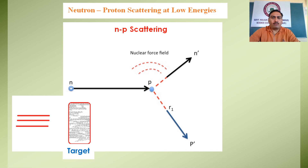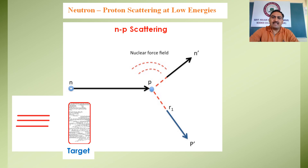The neutron-proton scattering cross section has been examined extensively, both experimentally and theoretically, at low energies and at high energies. At low energy below 10 MeV, the scattering is essentially due to neutrons having zero angular momentum, that is the quantum number L equals zero. Hence, in the center of mass system, the angular distribution of scattered neutrons is isotropic. In the present case, we will discuss the neutron-proton scattering for the L=0 state.